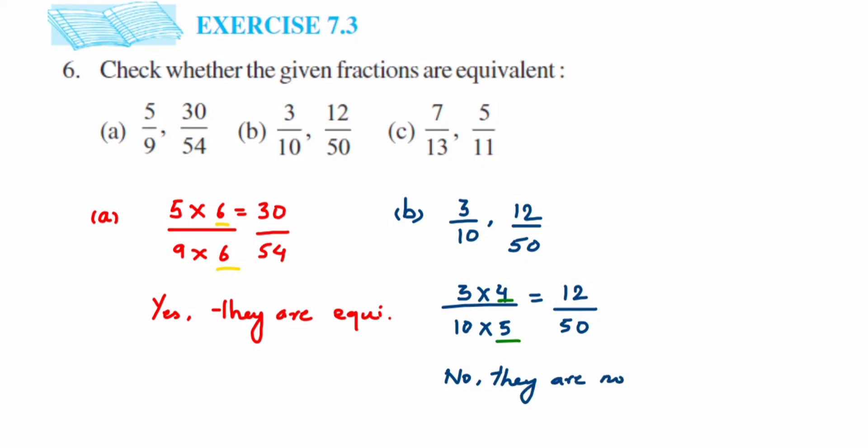For the third question, if you observe the numbers themselves, we can say they are not equivalent. We have 7/13 and 5/11. We know that in the 7 table, 5 doesn't come. If we multiply 7 with any number or divide with any number, we will not get 5.